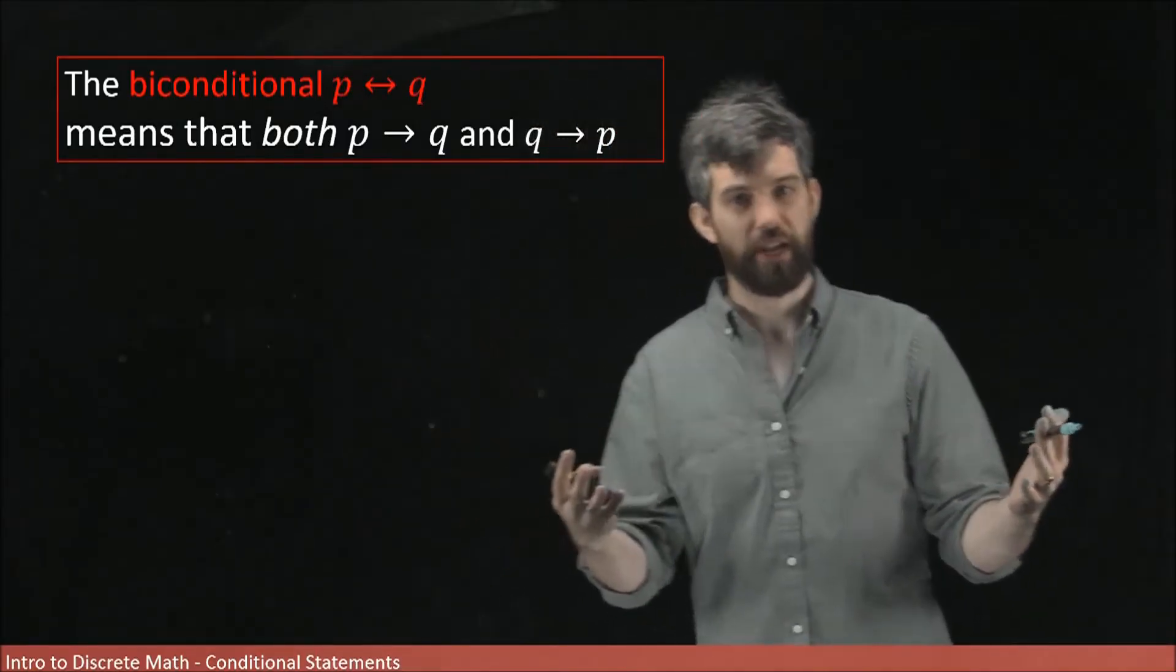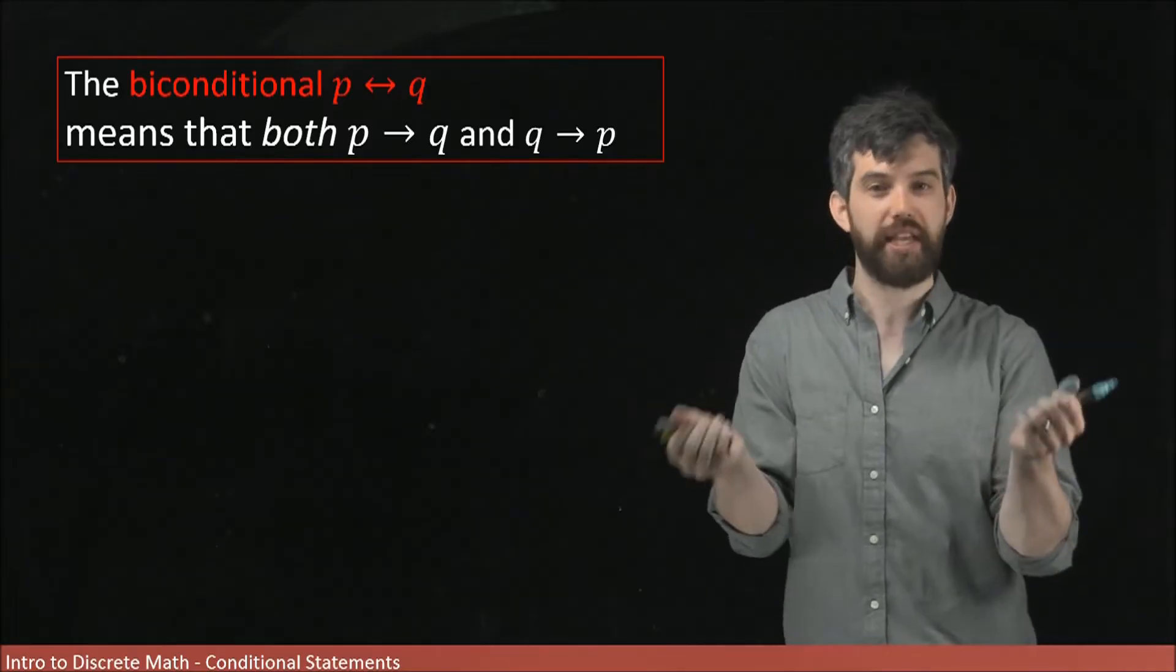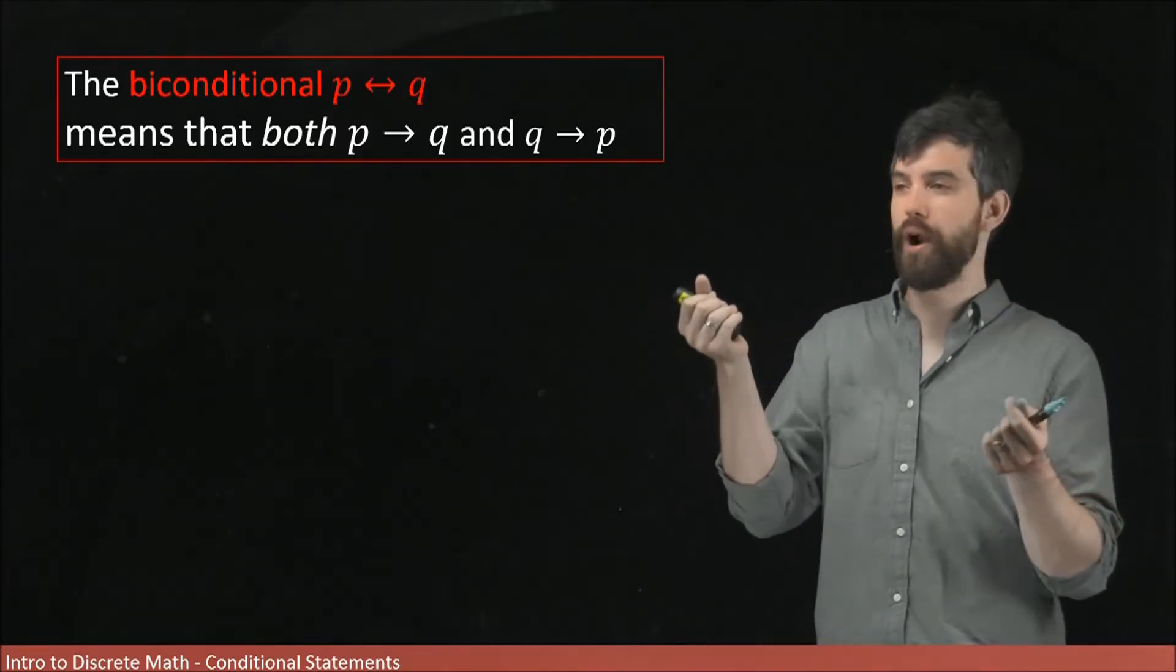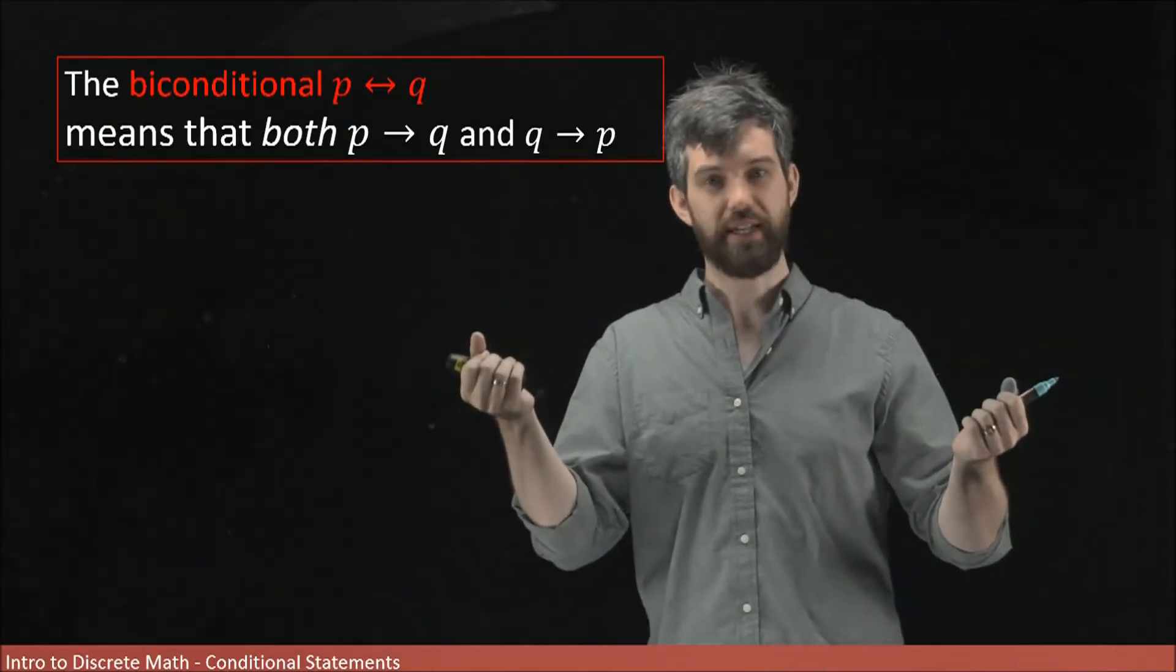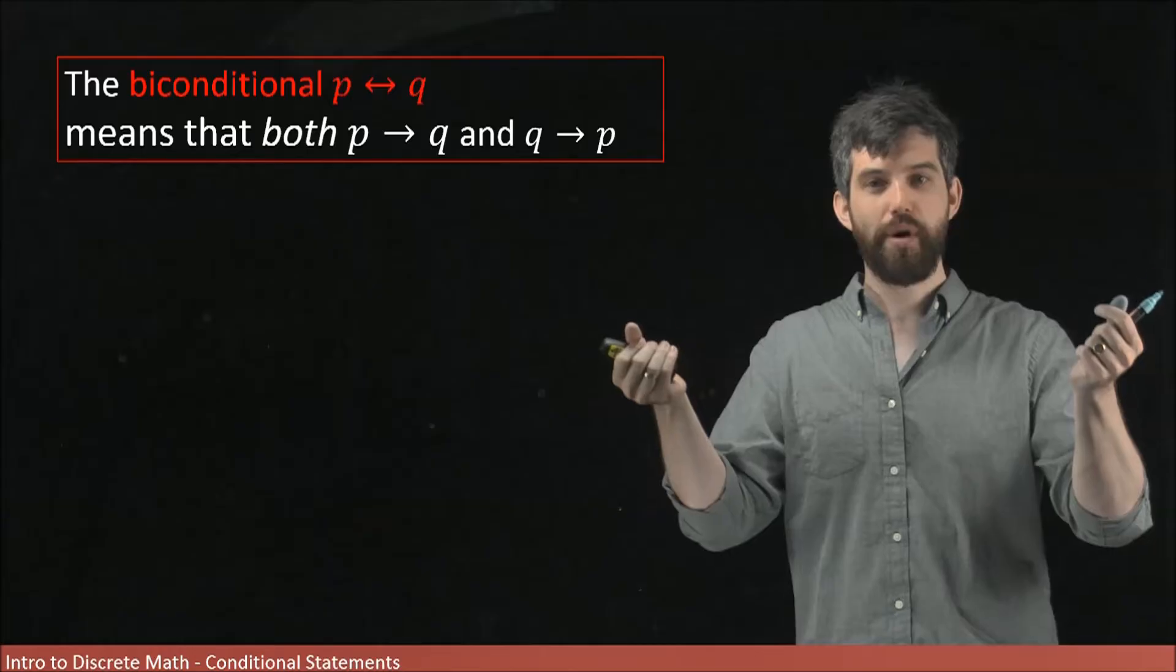While it's true that generally an implication and its converse are not the same thing, they don't have the same truth value, what you can have is a scenario where both directions, the original conditional and its converse, where those are both true.